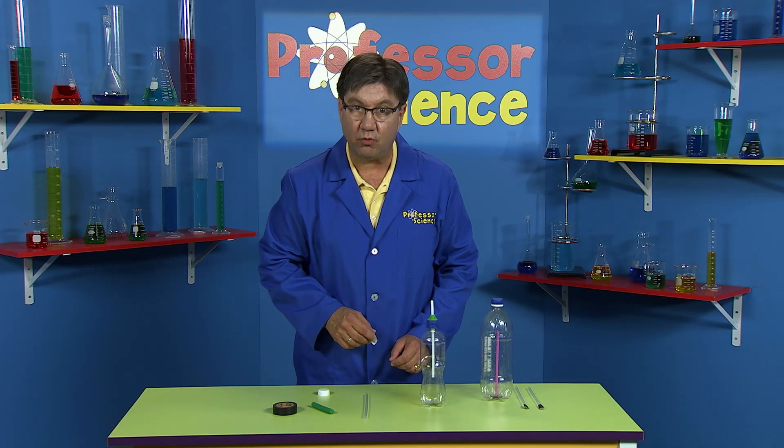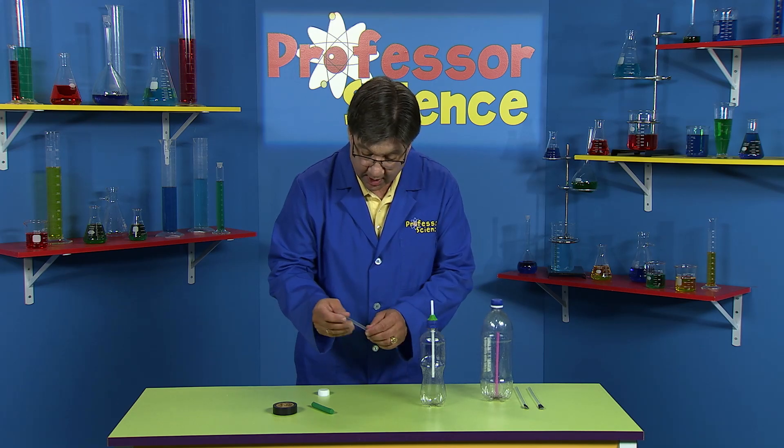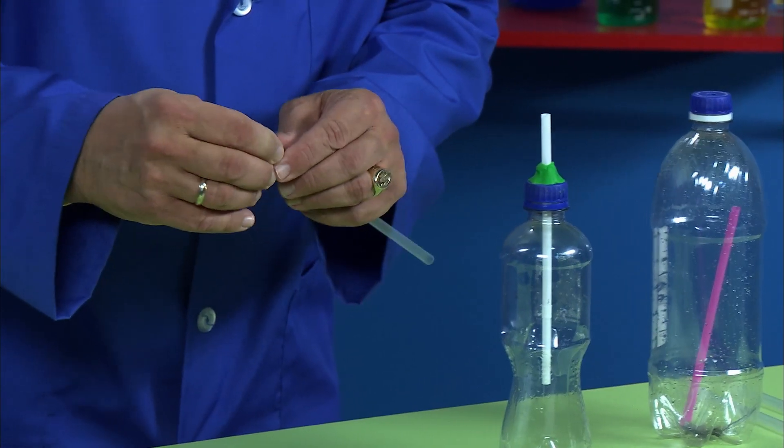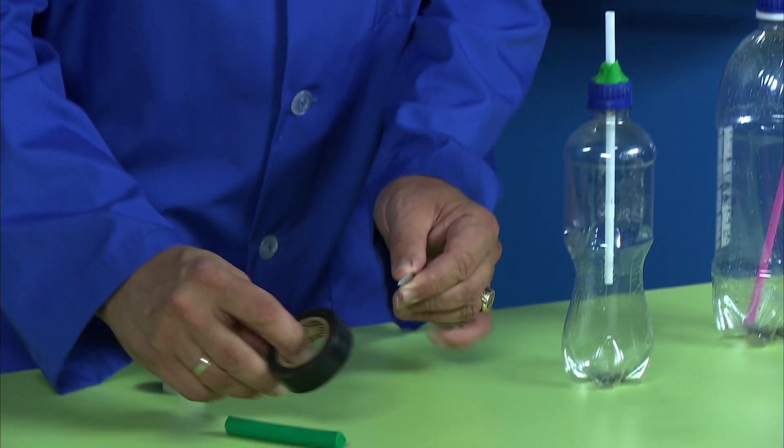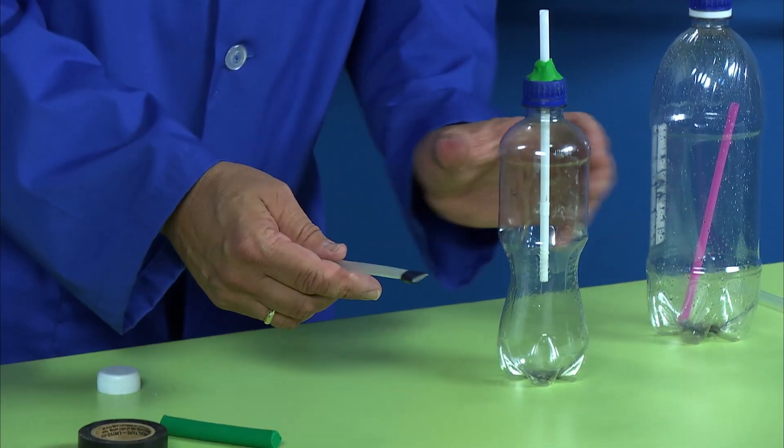Next you need to make your rocket. So you take the larger straw and you bend the end and then you secure it with the tape. I have a rocket right here ready made.